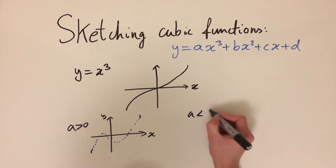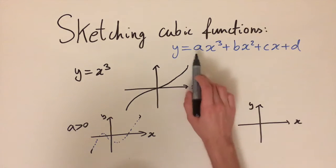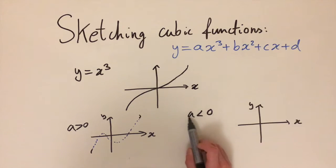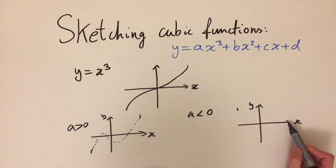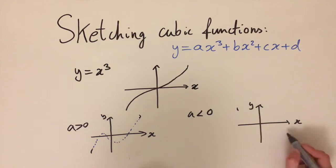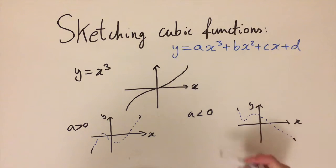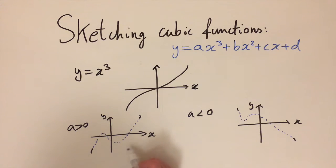For the second case, if a is negative, then we have a negative x cubed term. If x is really negative, then we're going to be multiplying a negative by a negative, which cancels out to give a positive, so y is going to be positive. And similarly, if x is positive, then y is going to be negative for very big x. So the corners tend to top left and bottom right. In general, a cubic equation has two turning points — two places where it goes down and then back up, or up and then back down.